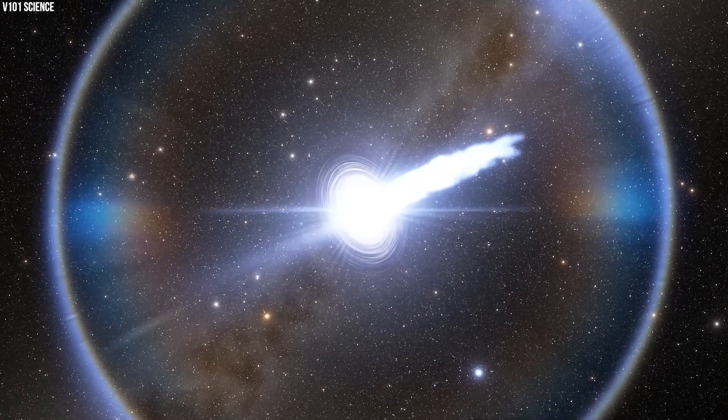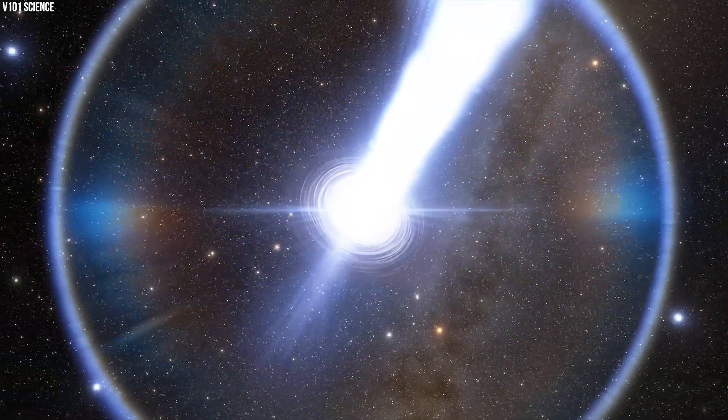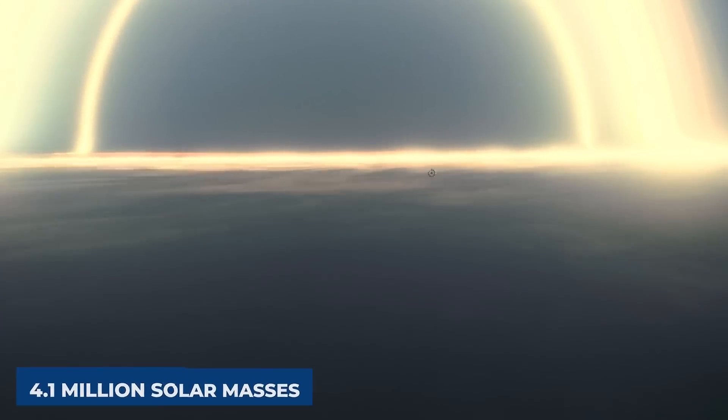At the center of the Milky Way is an intense radio source called the Sagittarius A star, a supermassive black hole made of around 4.1 million solar masses.